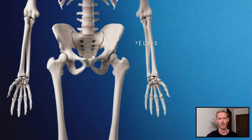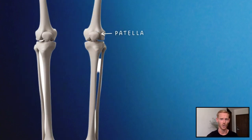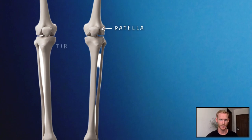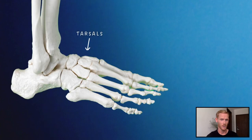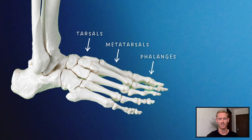Now on to the lower body, beginning with the pelvis, which articulates with the femur at the hip joint. The knee is protected by the patella or kneecap, and below the knee the tibia and fibula can be found, the fibula being the smaller one of the two. The tarsals are the bones at the top of the foot, the metatarsals are in the middle, and then finally we have the phalanges again, which in this case are the toe bones.